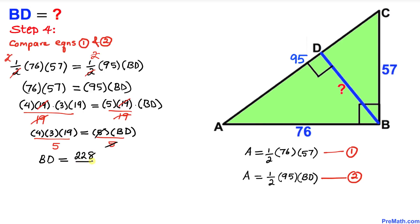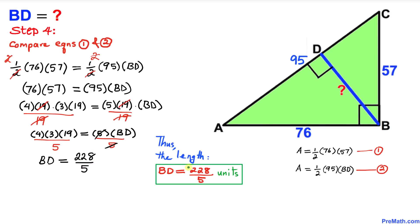So our final answer is BD equals 228 divided by 5 units. Thanks for watching, and please don't forget to subscribe to my channel for more exciting videos. Bye!